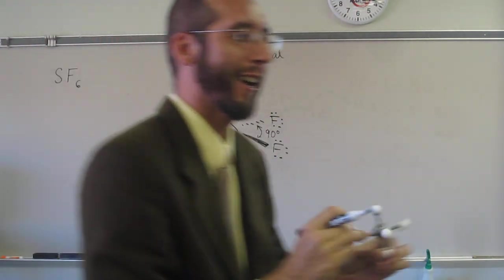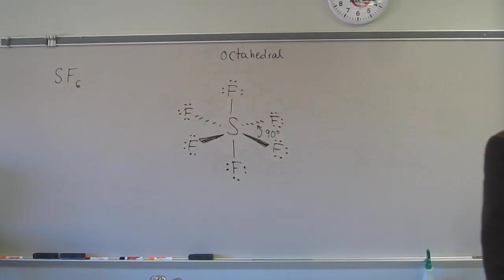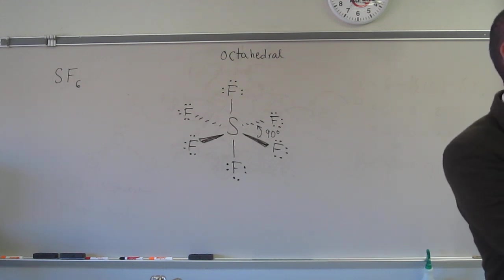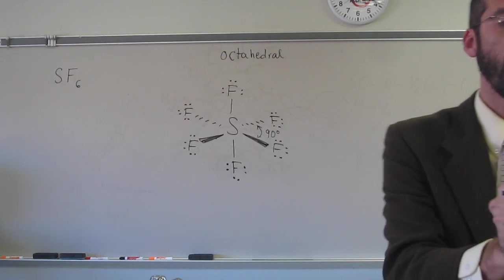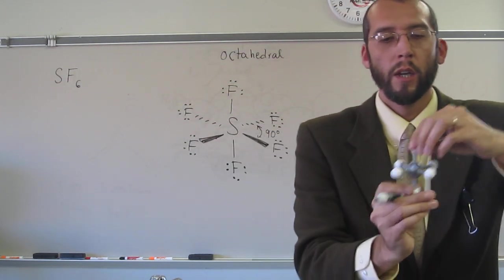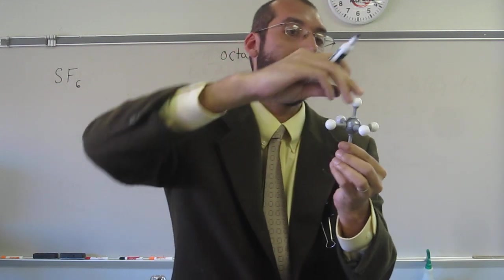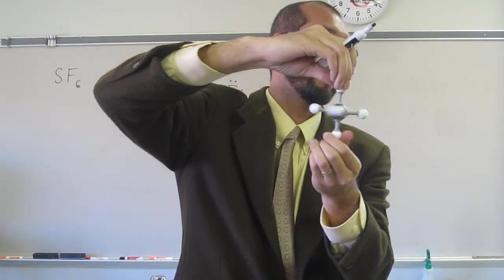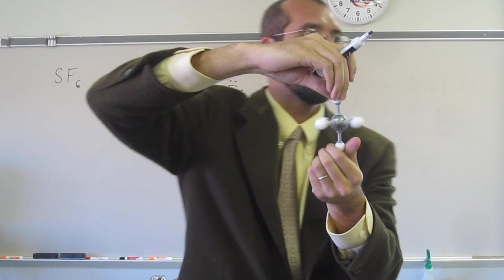I know my students well enough to be able to say that. But anyway, so look at these. You see the equatorial, in this case, fluorines, right? So if you look, 90 degrees apart from each other. So these guys are on the axis, right? You see that? So we call them axial.